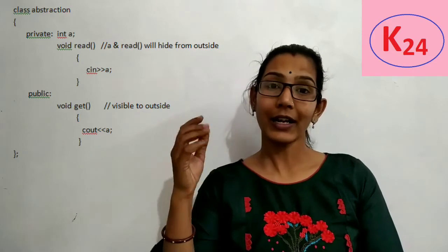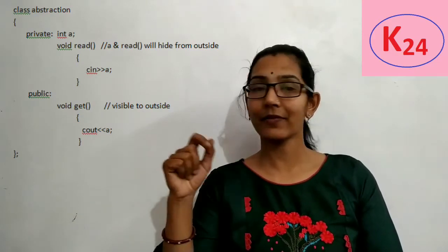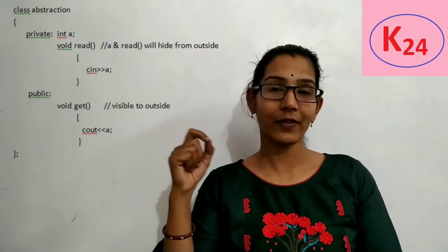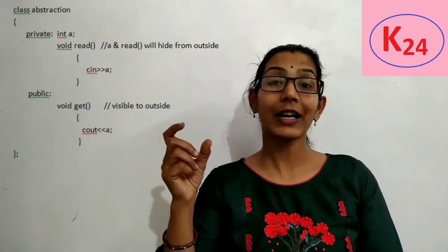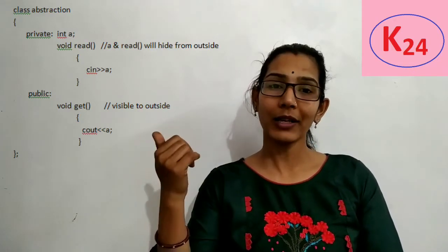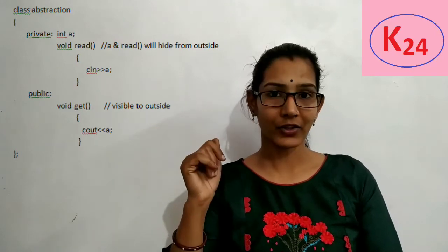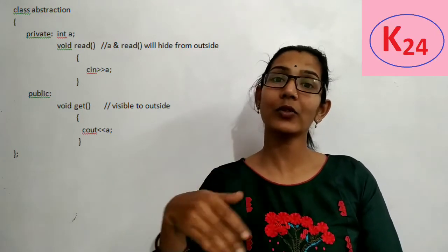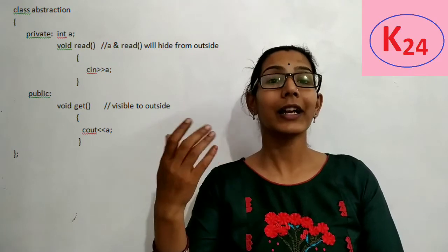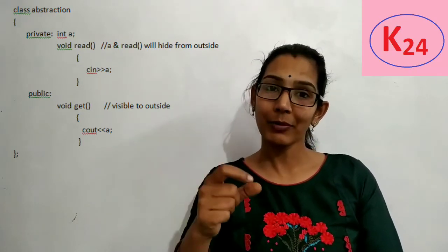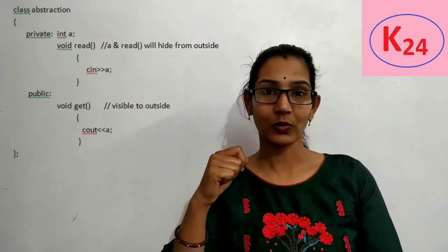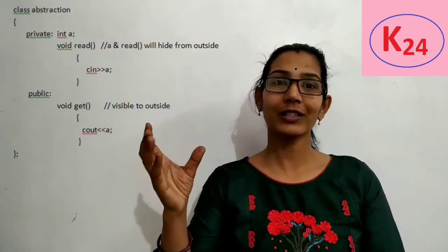Now we will see a simple example where data abstraction is applied. This is the class 'abstraction', and in it we use two access specifiers — private and public. In private, we define int a and a read function, which are the internal details hidden from outside the class. In public, we define a get function, which is accessible to all users of the class. The public get function will access the private read function and the variable a. This shows the concept of data abstraction.